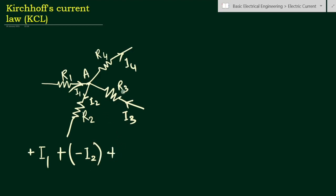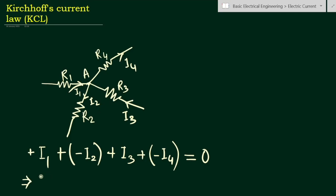The third current I3 is coming towards the point so it is positive. I4 is going outward from the point so it is negative. According to Kirchhoff's Current Law, the sum of the currents equals zero, giving us: I1 minus I2 plus I3 minus I4 equals zero.